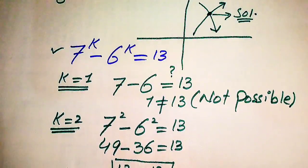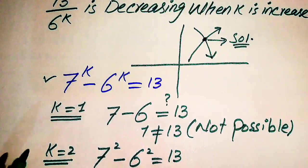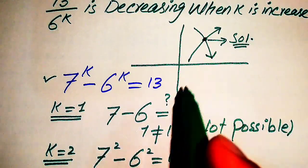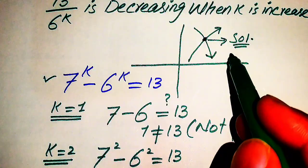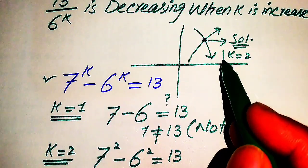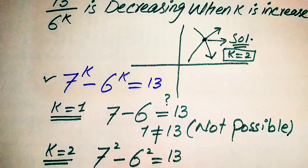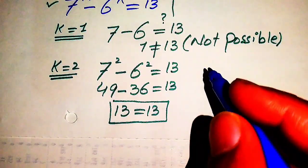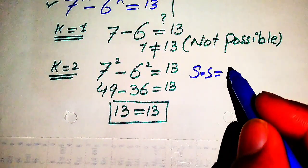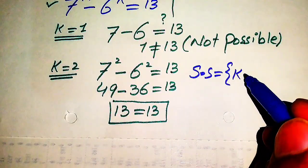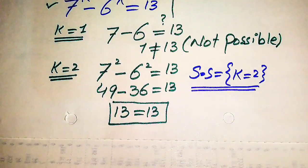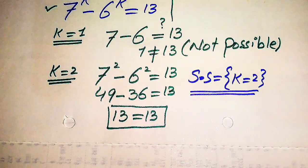We can finally conclude that k equals 2 is the point of intersection, which is the solution set of the given equation. The solution set is k equals 2 — this is the only real positive solution. Thank you for watching this video; please subscribe to my channel for more exciting videos.